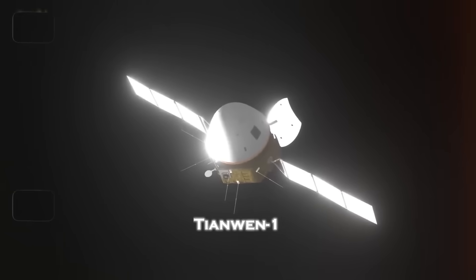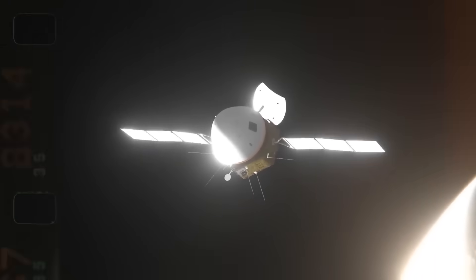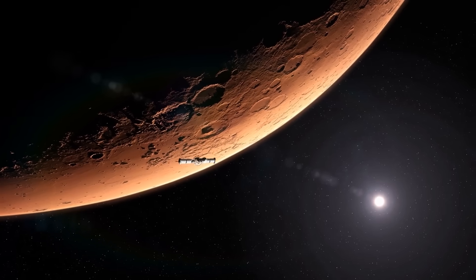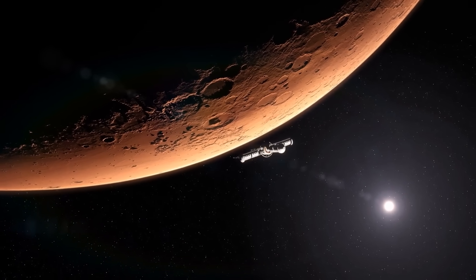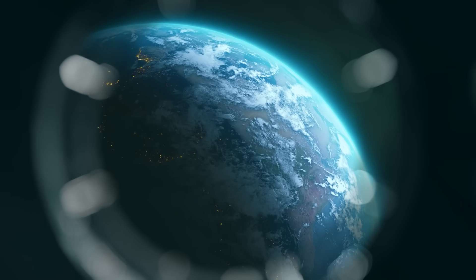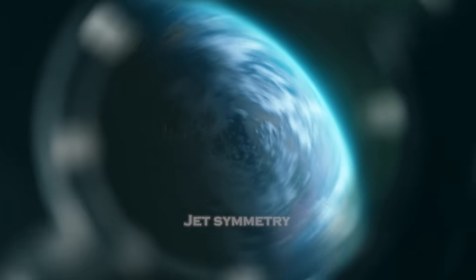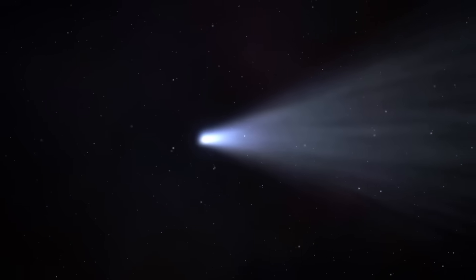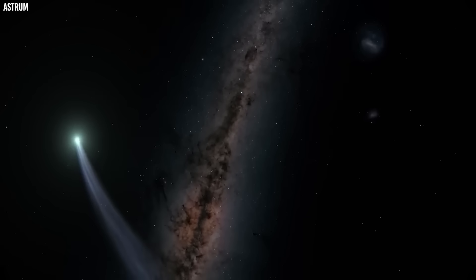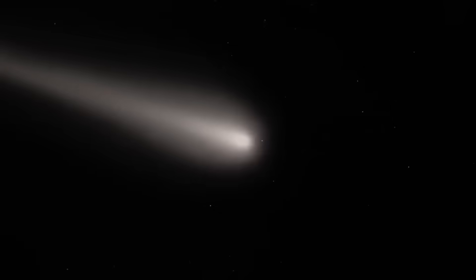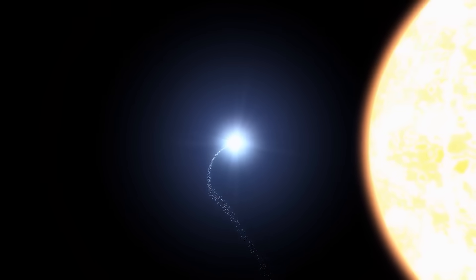Tianwen-1's medium resolution camera wasn't built for deep space comet studies. But with precise adjustments to exposure and orientation, it captured something that had only been hinted at from Earth. Jet symmetry. The images revealed faint, rhythmic, multi-directional plumes that look almost like miniature thrusters firing in coordinated intervals.